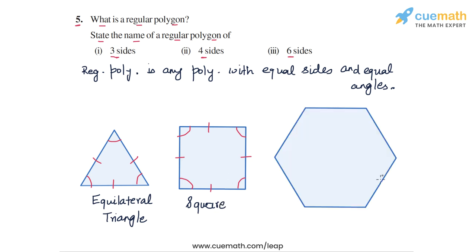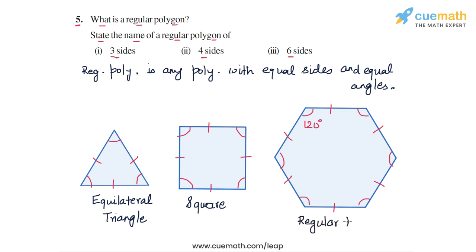A regular polygon of six sides will look like this. All six sides of this polygon will be equal and similarly all the angles will be exactly equal. You can verify that each angle will be equal to 120 degrees. So a regular polygon of six sides is a hexagon with all its sides and angles equal — we can call it a regular hexagon.